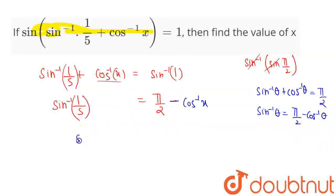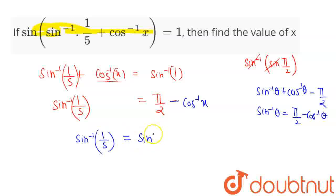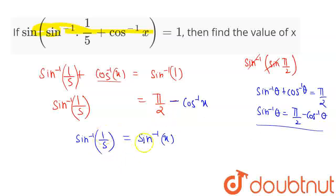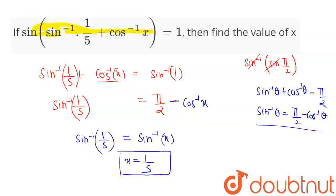So that means I can write this as sin inverse of 1 by 5 equals sin inverse of x. Here you can see that I have used this identity. So, comparing both the sides, I am getting x equals 1 by 5. This completes our solution.